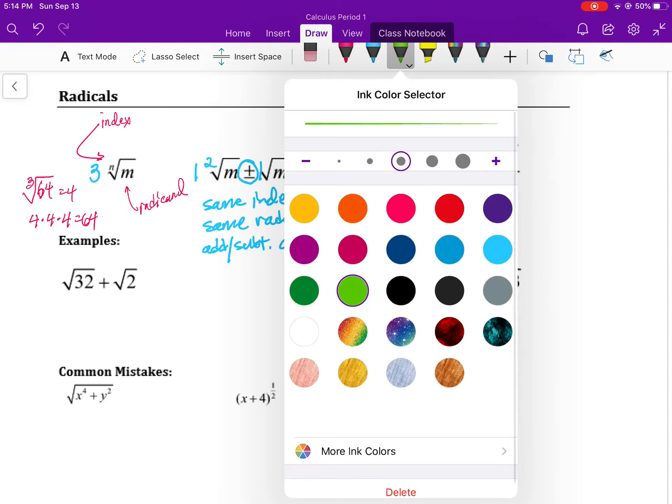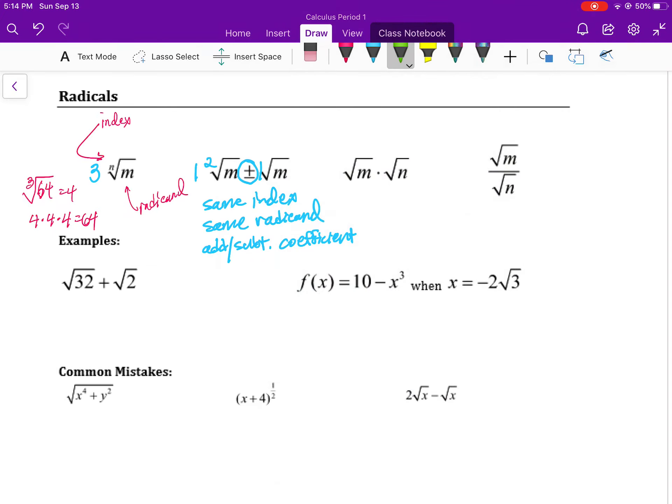This restriction is not true for multiplication. For multiplication, all you need is the same index, and if you have the same index then you are free to multiply your two radicands under the same square root. This is also true of division.